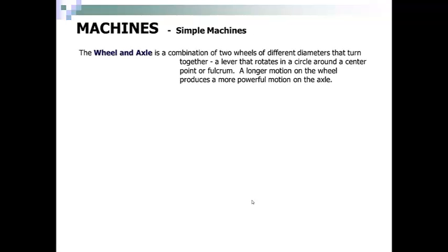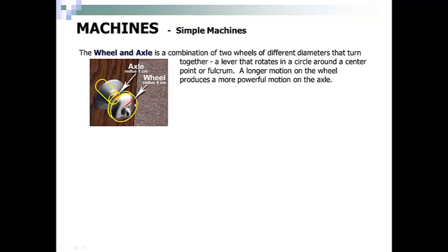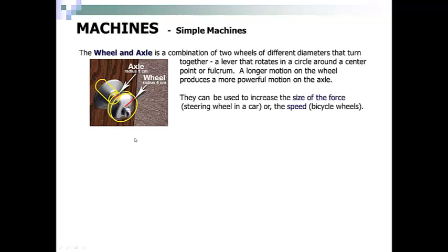A wheel and axle is a combination of two wheels of different diameters that turn together. A lever that rotates in a circle around a center point or fulcrum. A longer motion on the wheel produces a more powerful motion on the axle. So a door knob is an example of a wheel and axle. The turning of the handle creates a much bigger turning of the handle here. They can be used to increase the size of the force, steering the wheel of a car, or in the case of bicycle wheels, increase the speed.